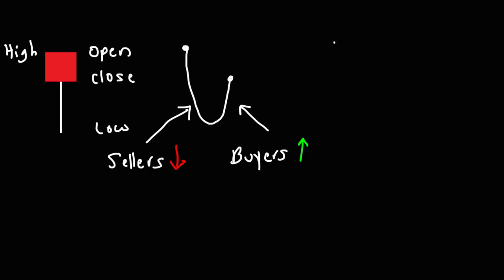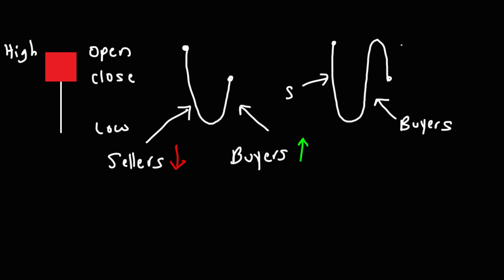Here's another possibility. The stock can open at that point, go down to the low, then back to the high, and then to the close. In this case, during the first part, the sellers are in control bringing the price down. During the second part, the buyers are in control bringing the price back up. And then during the third part, the sellers are driving the price back down to the close. Looking at a candlestick, it can tell you what's happening in the market during that trading day.